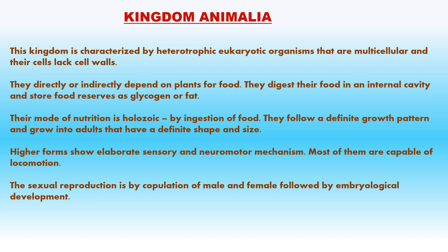Kingdom Animalia includes all multicellular animals known as metazoans. Their cells do not have a cell wall and they are generally motile — motility made possible by development of muscular and nervous systems. They have a heterotrophic mode of nutrition. They follow a definite growth pattern and grow into adults. They are the basic consumers on earth and form links in various food chains and food webs. Sexual reproduction is by fusion of gametes followed by embryological development.